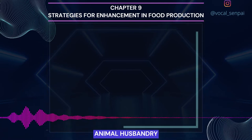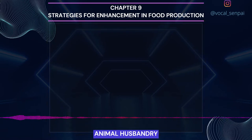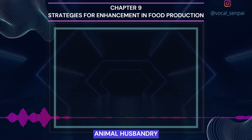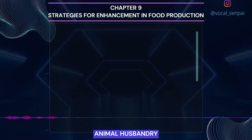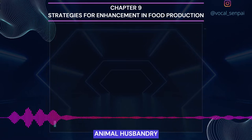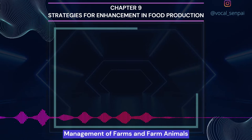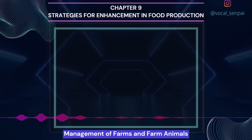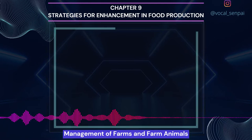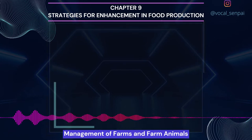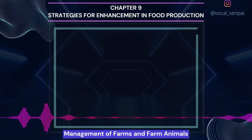It is estimated that more than 70% of the world livestock population is in India and China. However, it is surprising to note that the contribution to the world farm produce is only 25%, i.e. the productivity per unit is very low. Hence, in addition to conventional practices of animal breeding and care, newer technologies also have to be applied to achieve improvement in quality and productivity.